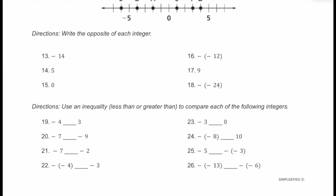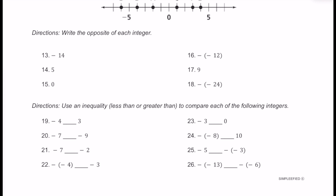Let's take a look at this next section. Here we're going to be going ahead and writing the opposite of each of the integers or values that we are given. For number 13, we're given negative 14. The opposite of negative 14 is just going to be positive 14. For number 14, we have 5. The opposite of 5 is going to be negative 5. For number 15, we have the number 0. The opposite of 0 is actually just going to be 0 — there's no such thing as positive or negative 0.